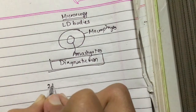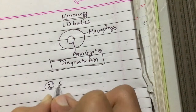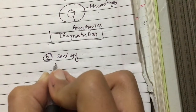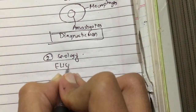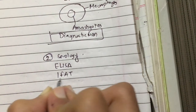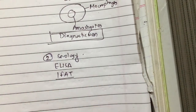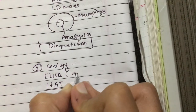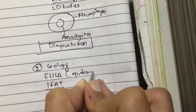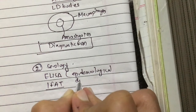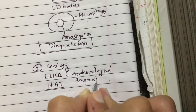Second, we can do serology. Serology can be done by ELISA and immunofluorescent antibodies. ELISA can be used both for epidemiological purposes and for diagnostic purposes.